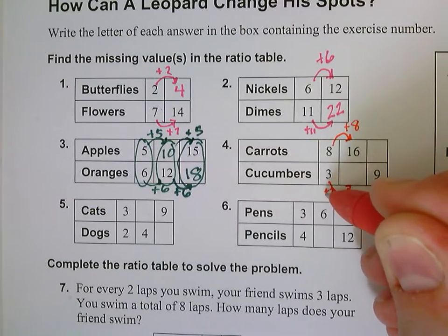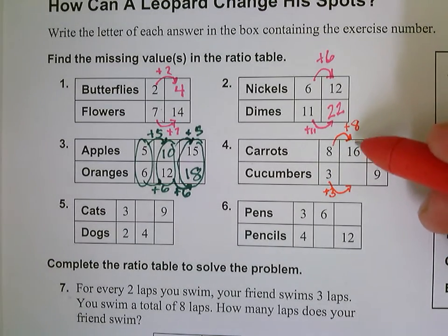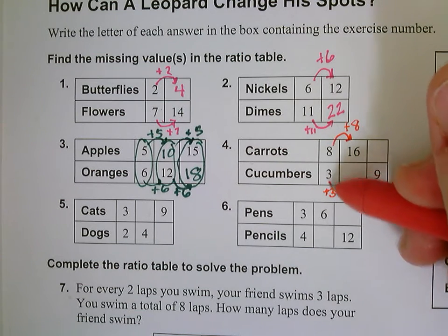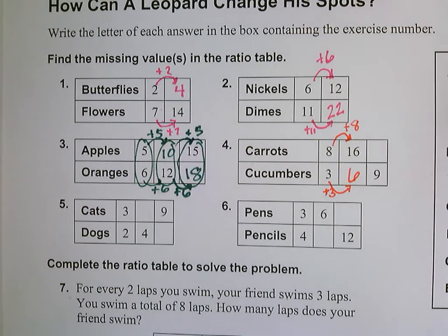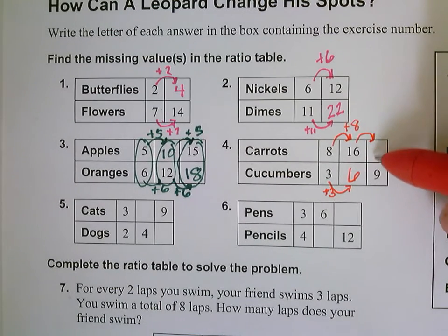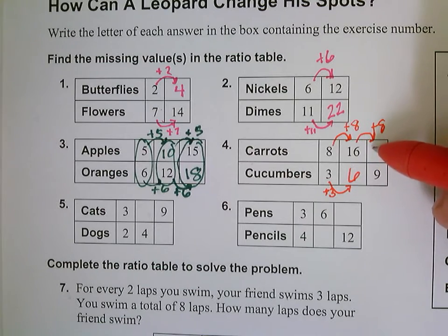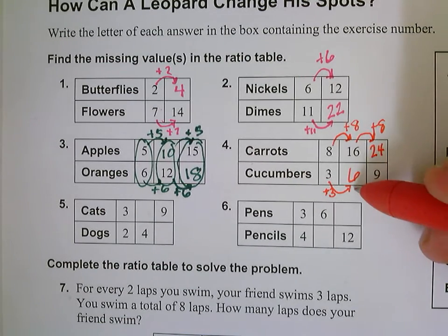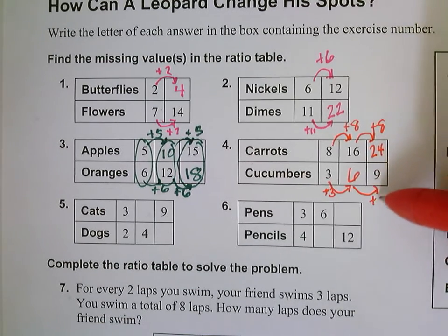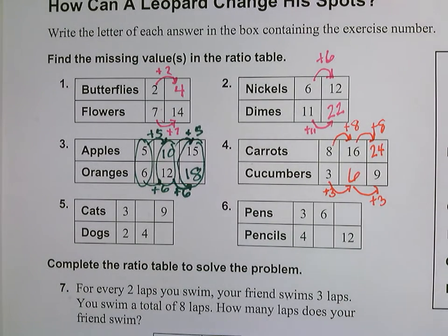When we're adding, we're adding that same quantity that we started with, and we're always adding the same amount. So, 3 plus 3 is going to give me 6 cucumbers to every 16 carrots. I'm going to add another group of 8 to get to the next line. Sixteen plus 8 more, that gives me 24, and 6 plus 3 more, that gives me 9. So, I could also have 24 carrots to 9 cucumbers, which is our ratio.